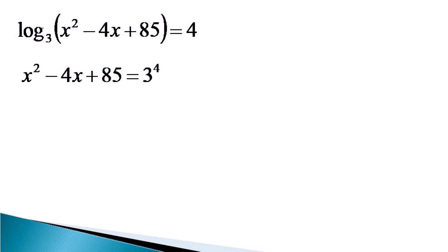It can be simplified by taking all the terms on the left-hand side as x² - 4x + 85 - 81 = 0, which simplifies to x² - 4x + 4 = 0, and which we can observe is (x - 2)² = 0.